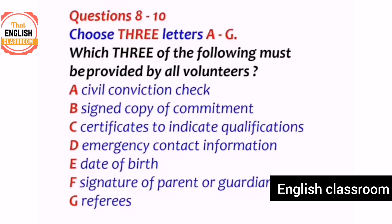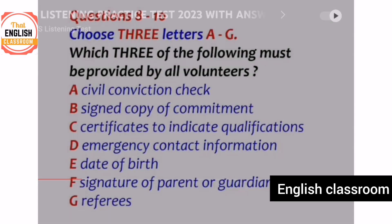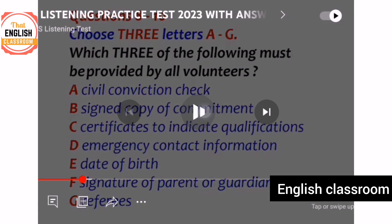Replaying: the form asks for name, address, and telephone number. You also need to fill in contact details for emergencies — that is option D. There is a space for date of birth, but that is only required if you are over 75.